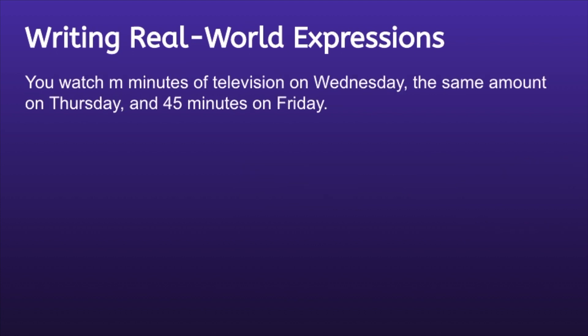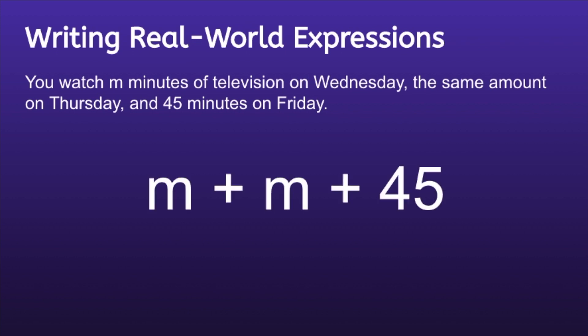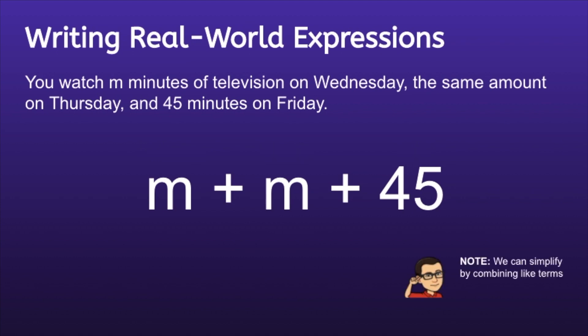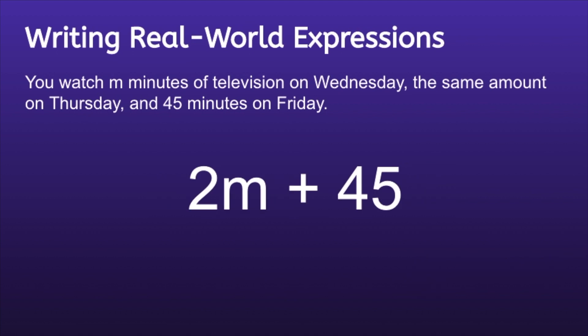You watch m minutes of television on Wednesday, the same amount on Thursday, and 45 minutes on Friday. The expression we can write to represent this real-world situation would be m plus m plus 45, where the first m represents the time on Wednesday and the second m represents the time on Thursday. Since the time was the same on Wednesday and Thursday, we can use the same variable. The 45 represents the 45 minutes on Friday. We can simplify by combining like terms — m and m — and m plus m is equal to 2m, so the final expression would be 2m plus 45.